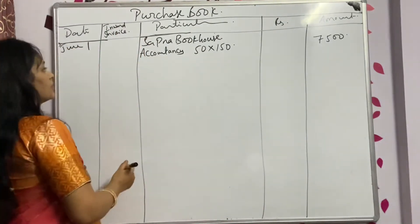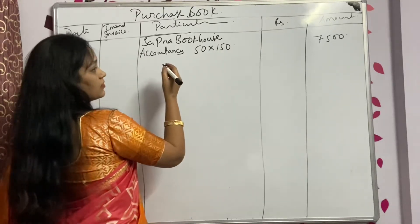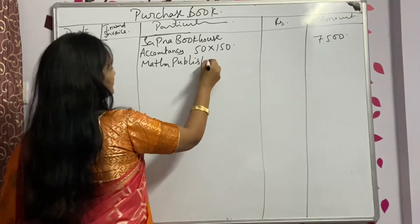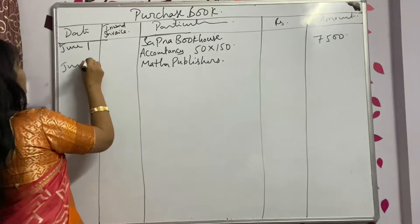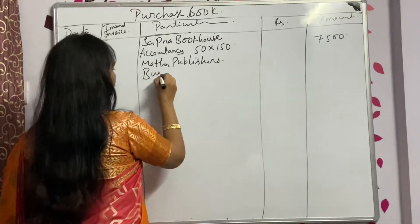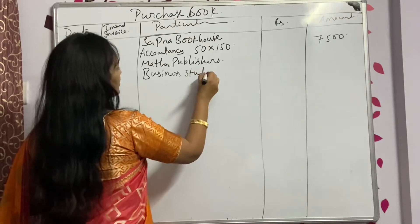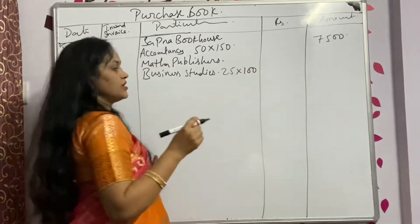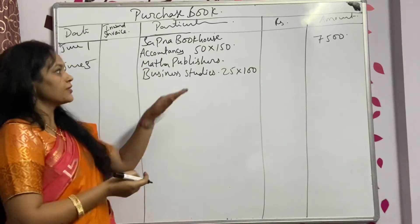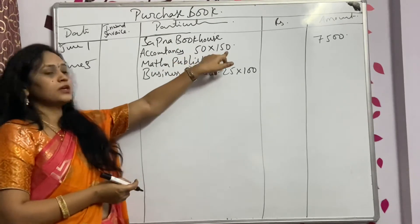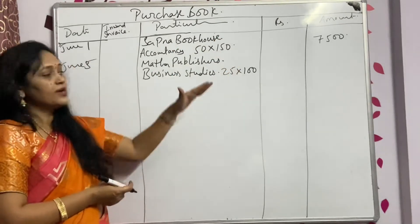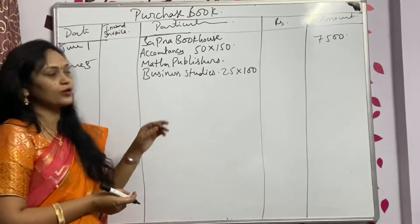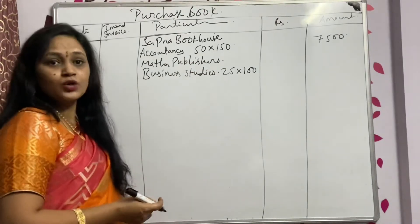The next transaction on June 5th: bought 25 business studies books from Matha Publishers. When writing, follow one consistent method — first how many items, then price. So 25 books at ₹100 each.